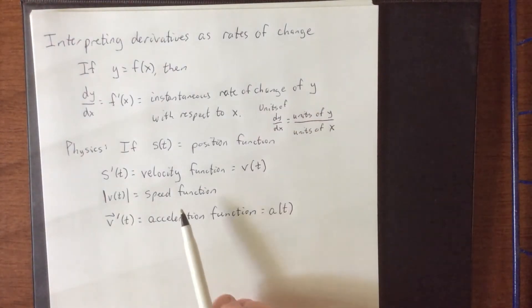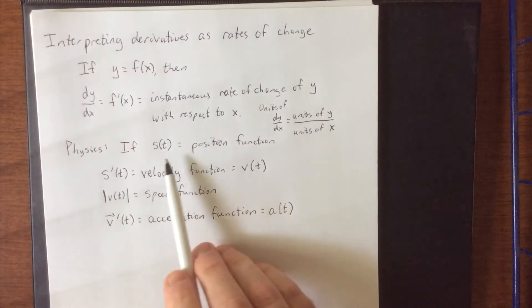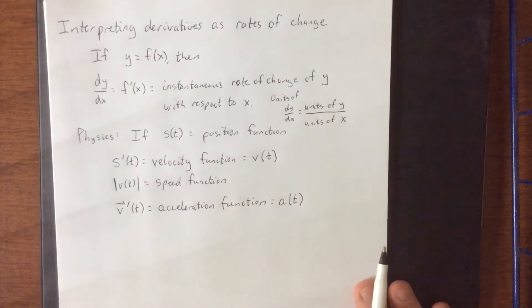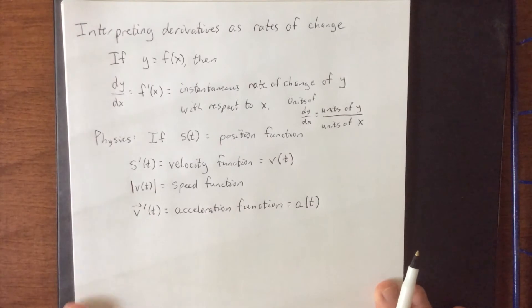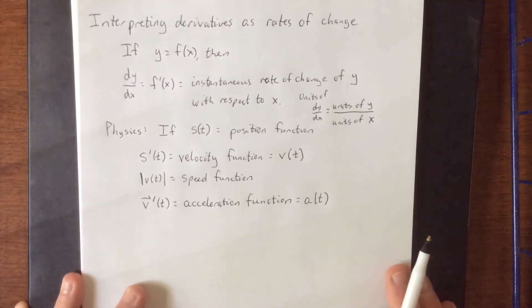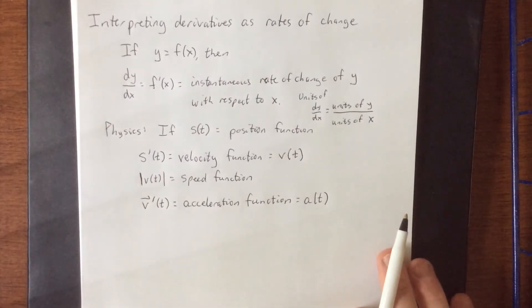So if we're looking at something like s prime of t, that would be the units of s divided by the units of t. So some common ones would be things like miles per hour, meters per second, parsecs per year. That's a good one right there.